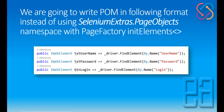So we are going to write the page object model in a different format, instead of using the Selenium extras page object namespace with page factory and InitElements method. We'll directly use a web element found via by.name, rather than the FindsBy attribute approach. We'll be working with the same page object model concept discussed in the Selenium breaking changes video.